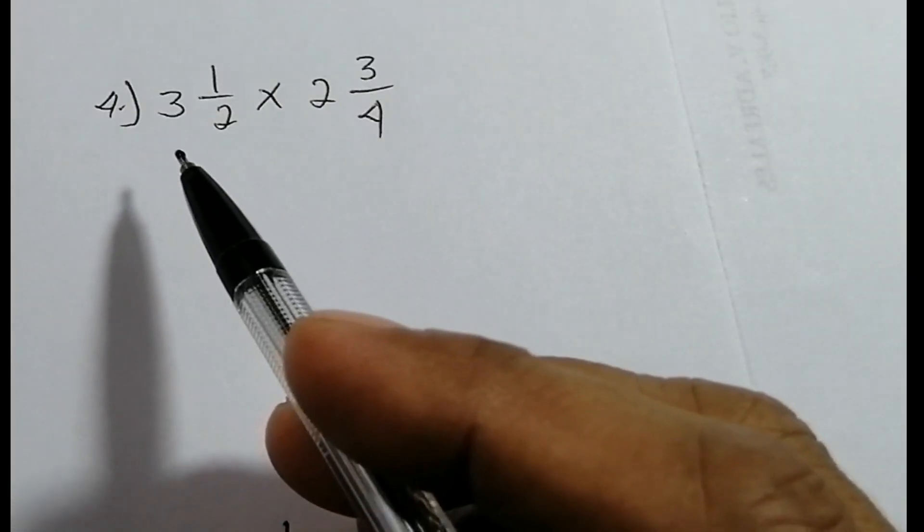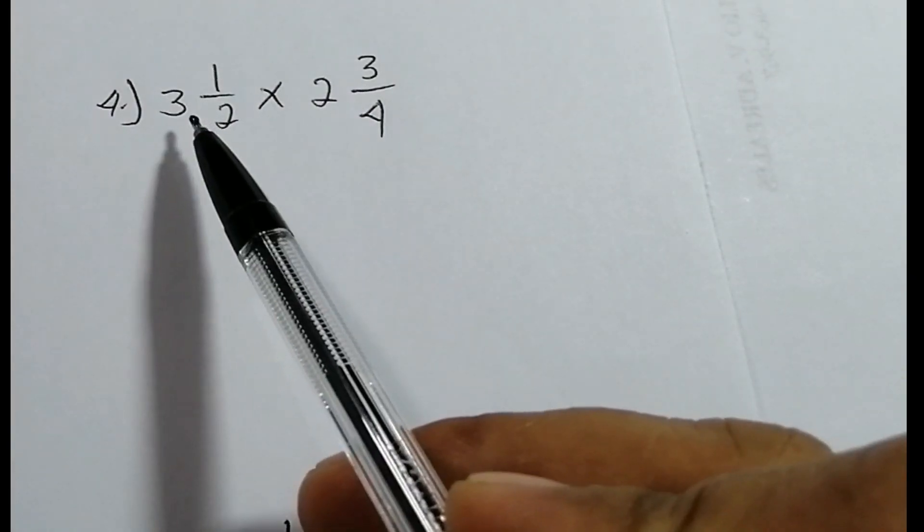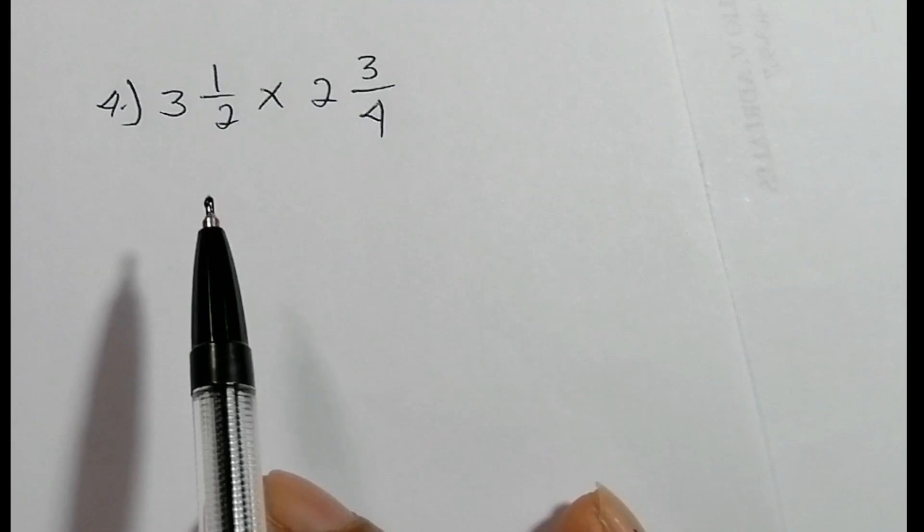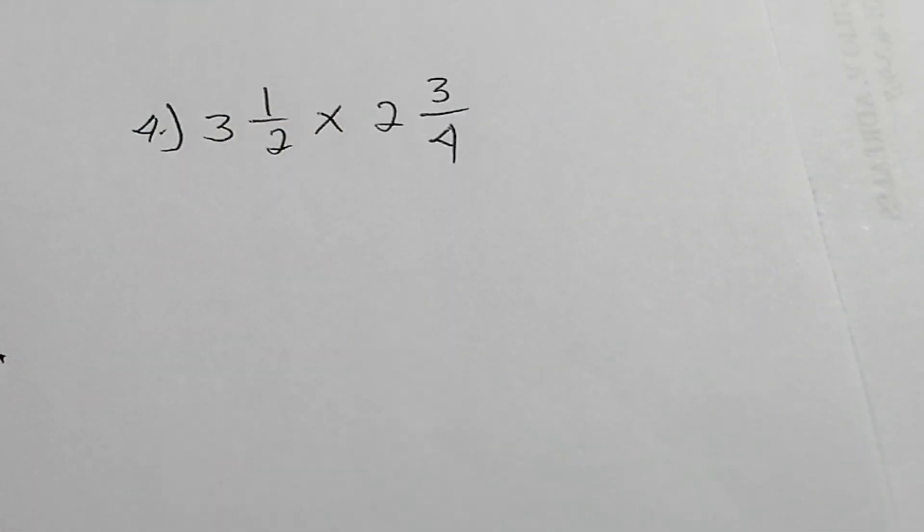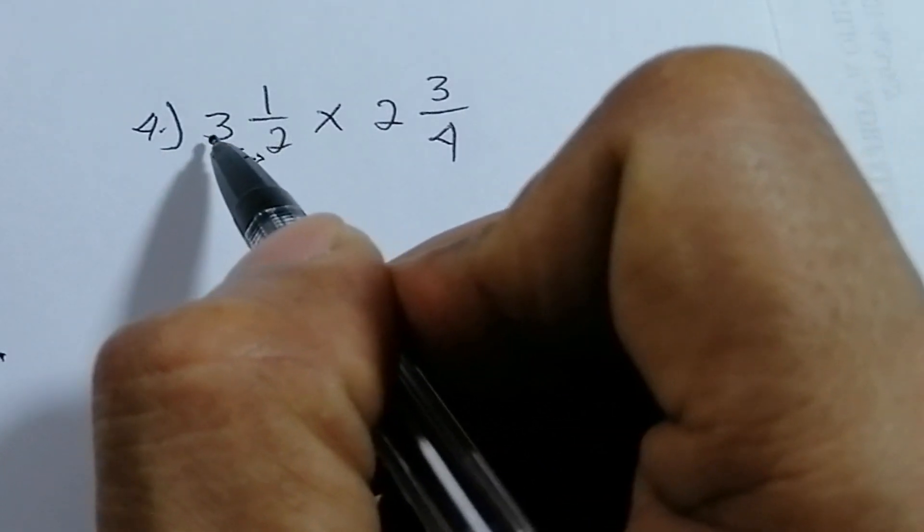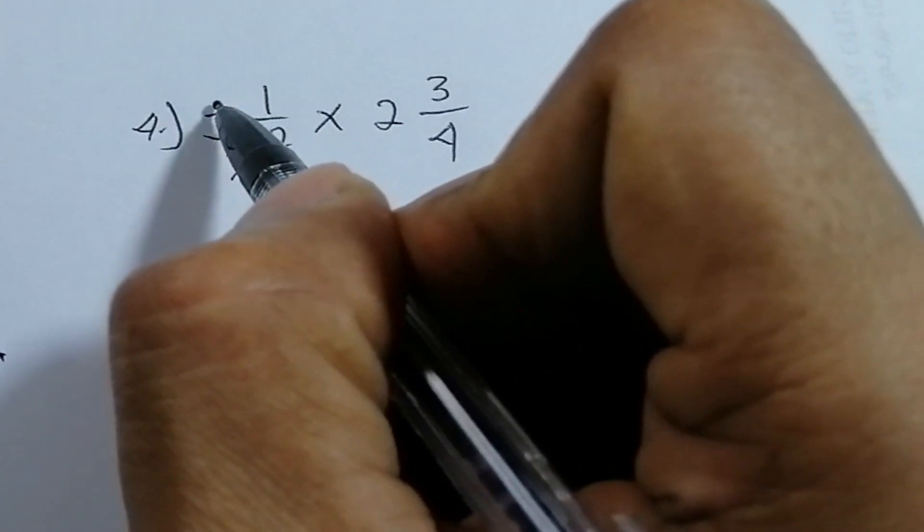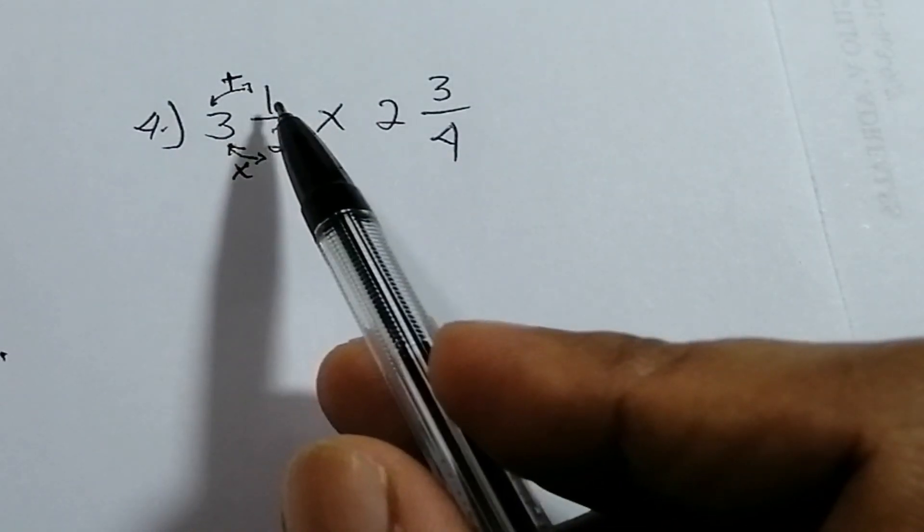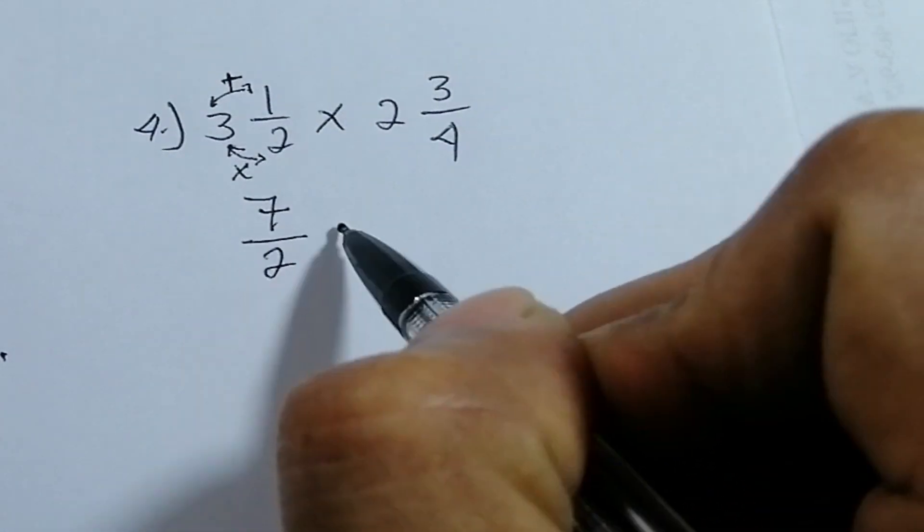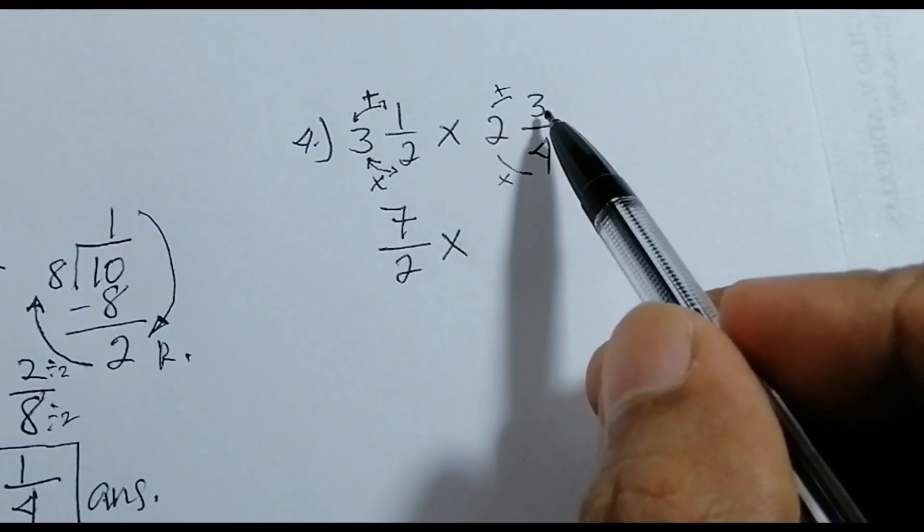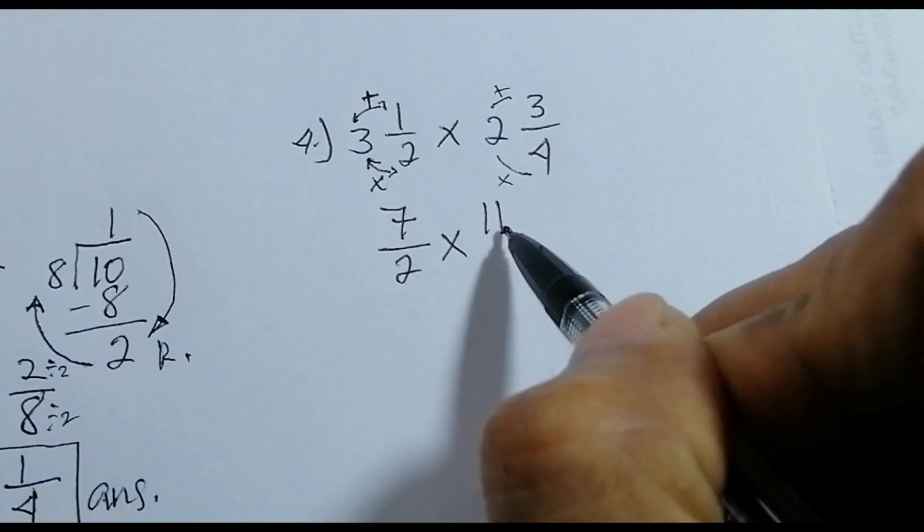Number four, we have here mixed fraction. Three one-half times two three-fourths. Paano gagawin natin dito? Of course, gawin natin itong improper fraction. Paano? Itong denominator, denominator multiplied by three, then plus numerator. So ganito. Two times three, six plus one, seven over two, times, ganon din dito. Four times two, eight, plus three, eleven. Eleven over four.